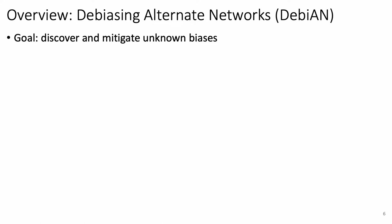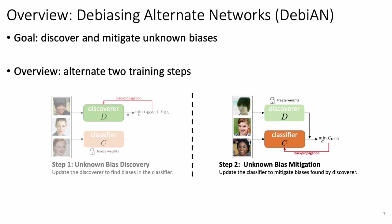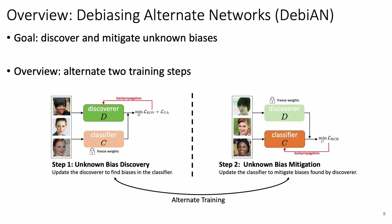To tackle this key challenge, we propose Debiasing Alternate Networks, or Debian, to discover and mitigate unknown biases. In general, Debian alternates two training steps to train two networks: a discoverer and a classifier. The first step is unknown bias discovery, where we update the discoverer network to find biases in the classifier, trained by our proposed equal opportunity violation loss and an unbalanced assignment penalty. The second step is unknown bias mitigation, where we update the classifier to mitigate the biases found by the discoverer based on our proposed reweighted cross-entropy loss. By training in an alternating fashion, the classifier will mitigate all biases found by the discoverer, leading to a more robust and fair model.